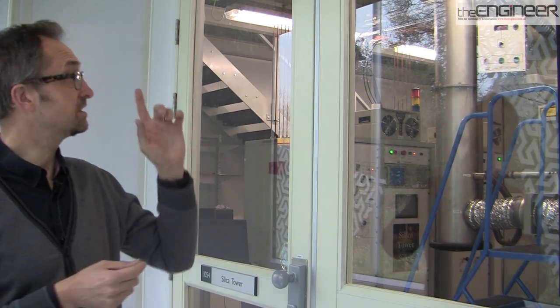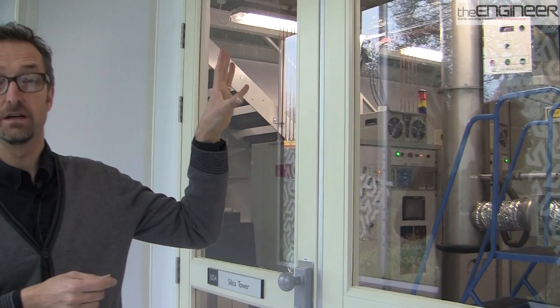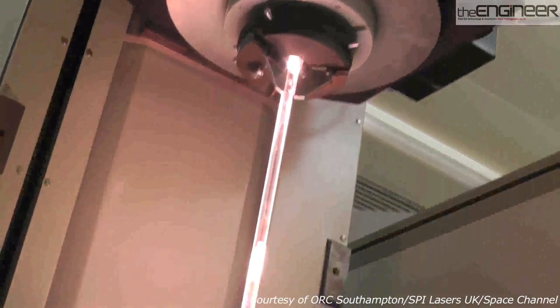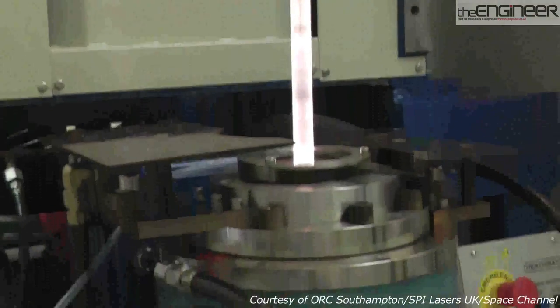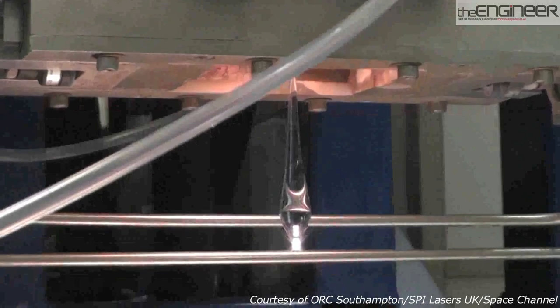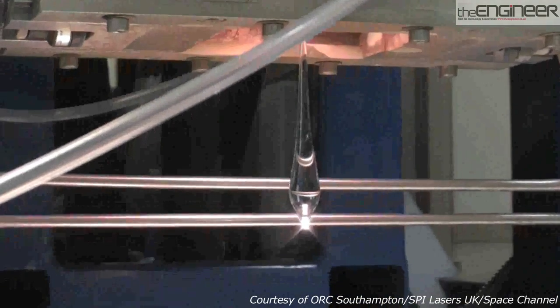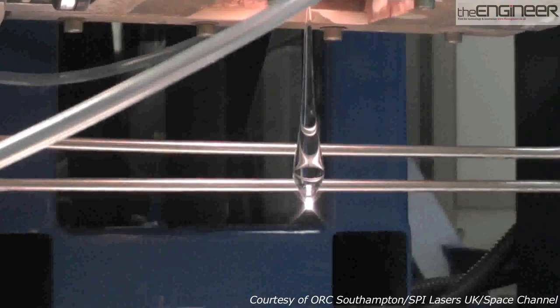Once we've got that tube, which is called a preform, then we take that and we put it into one of these machines up here, which is called a drawer tower, and we stretch it. We heat it up until the glass is just about melting, and then we stretch it into a very thin filament.